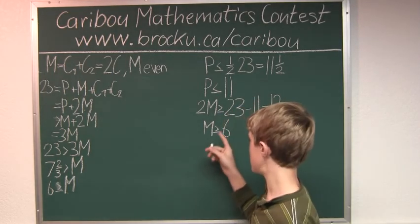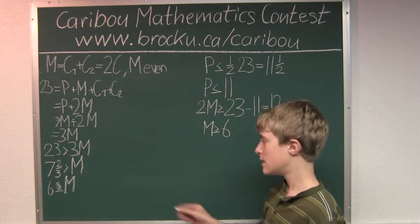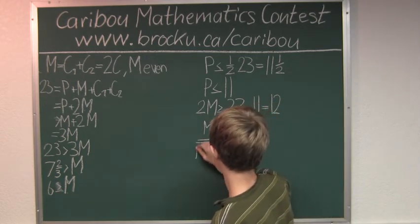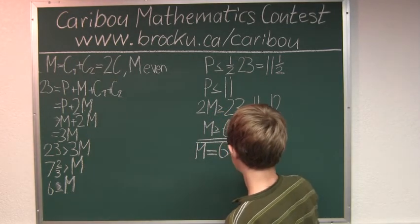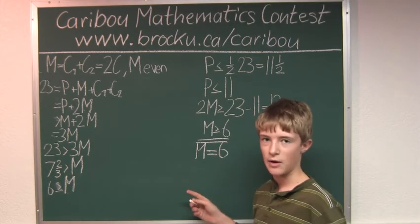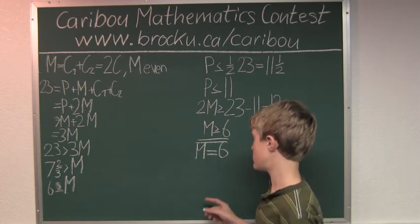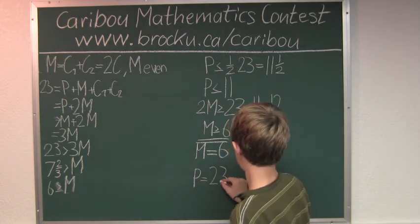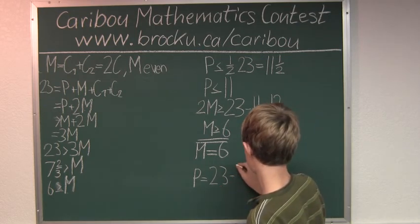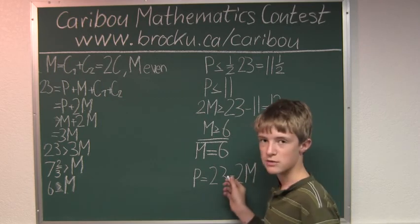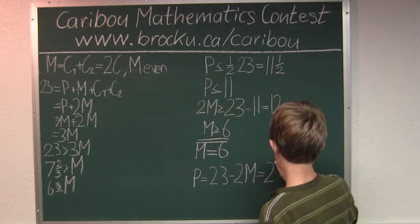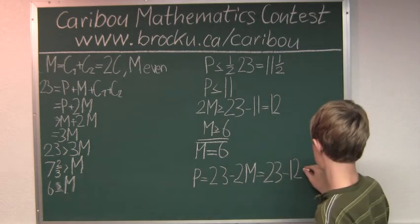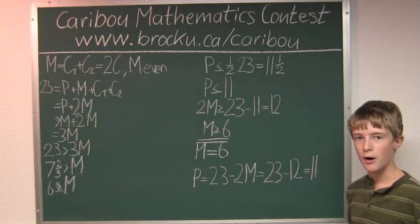So when we look at both conditions to satisfy them, this would have to be M equals 6. So since we know this, now we know how many beans Pa eats, and that would be all 23 beans minus the other part which is 2M, which is also equal to 23 minus 12, which would equal 11. So Pa bean eats 11 beans.